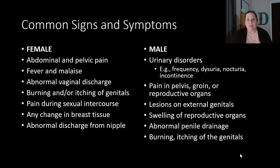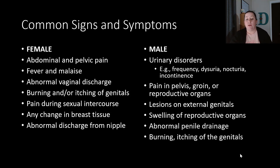Now let's talk about some common signs and symptoms seen with the reproductive system. In females, these include abdominal and pelvic pain, fever and malaise, abnormal vaginal discharge, burning or itching in the genital area, pain during sexual intercourse, any change in breast tissue, and abnormal discharge from the nipples.